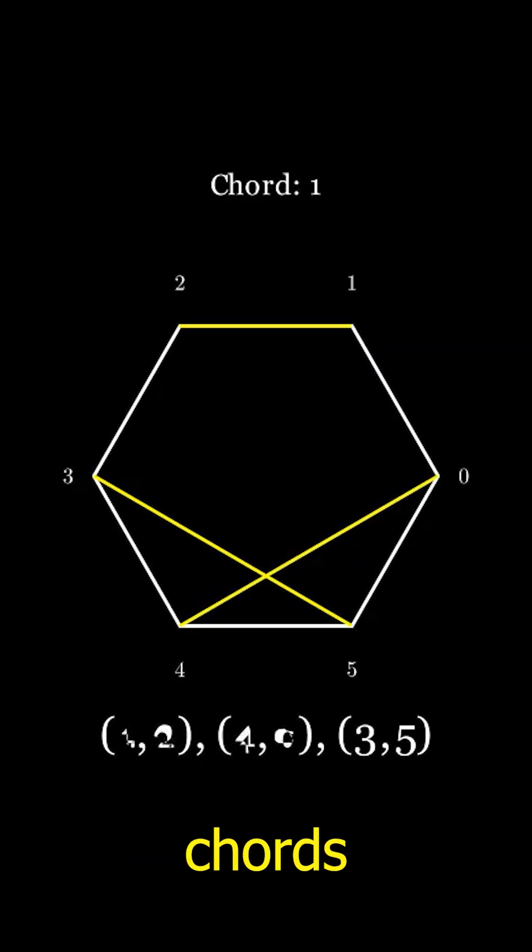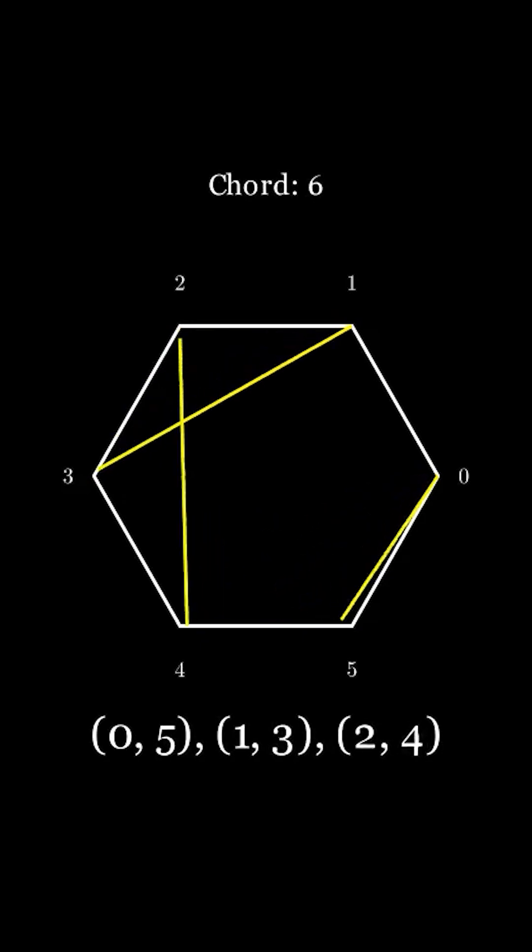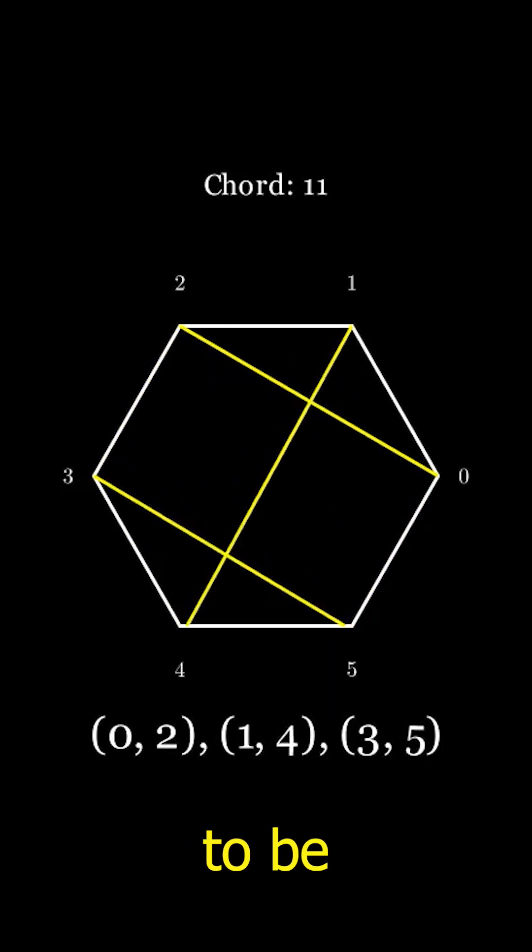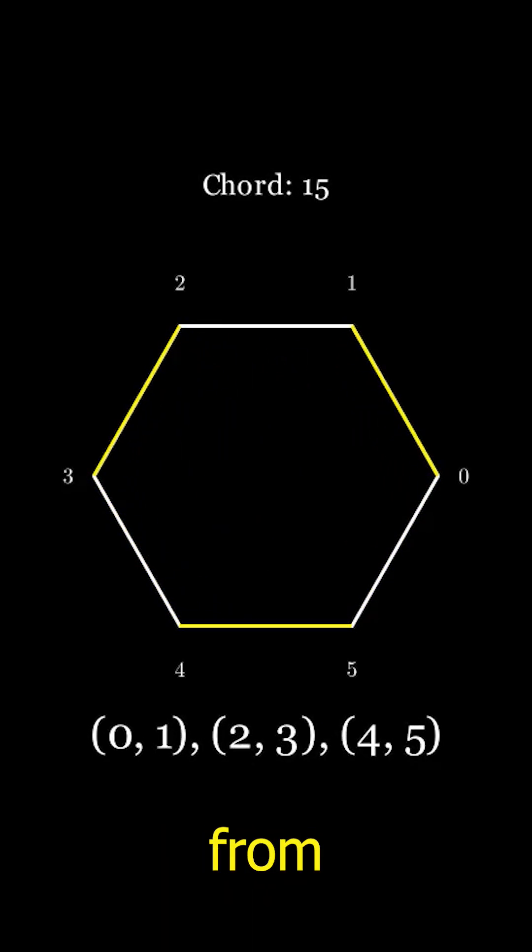What is the total number of unique chords for a hexagon? The answer turns out to be 15, which you can also get from this formula.